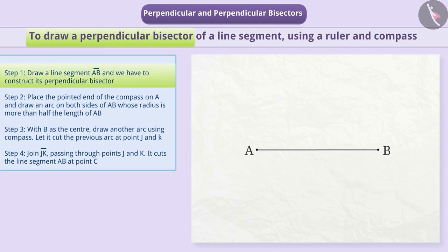Suppose we are given a line segment AB of any length and we have to draw its perpendicular bisector. Step 2: Place the pointed side of the compass on A and draw an arc on both sides of AB whose radius is more than half the length of AB.